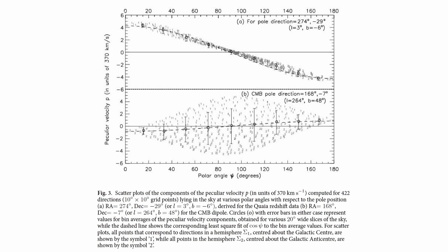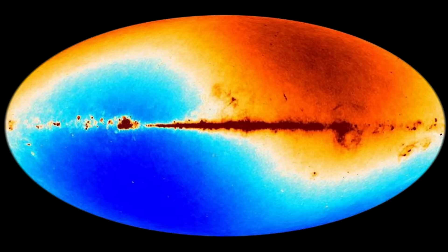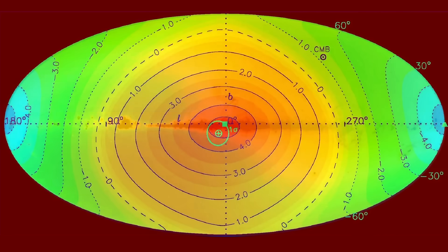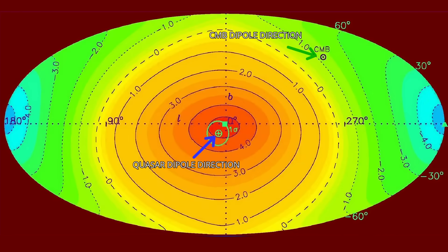Their redshifts are systematically higher in one half of the sky and lower in the other. Exactly what you'd expect if we were moving. However, then comes the problem. The direction of this motion does not align with the CMB. Instead of pointing towards Leo, the quasar dipole points almost 90 degrees away, directly towards the center of our own galaxy.